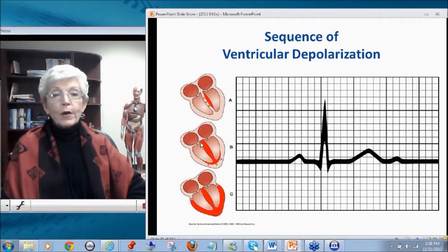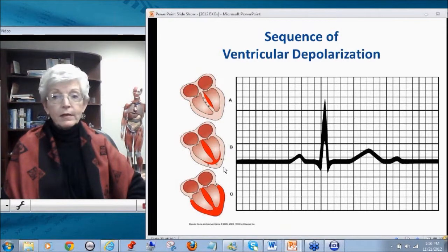The next wave is directly down towards the apex of the heart. Directly in the normal line of where that path of electricity is going. We get a very positive wave. We get the R wave.